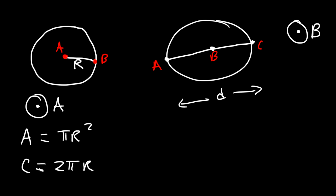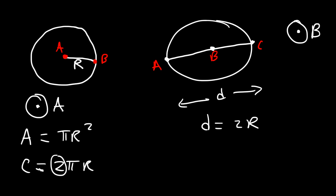The circumference of a circle is basically the perimeter — it's the distance around the circle. Since the diameter is twice the radius, we can replace 2r with the diameter. So you can also calculate the circumference using the equation π times the diameter. Sometimes you may need to calculate only a section of the circle.